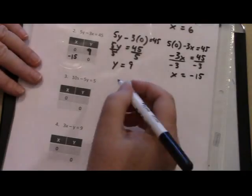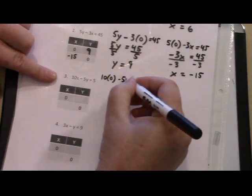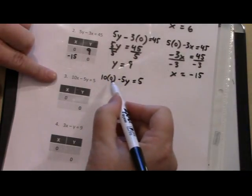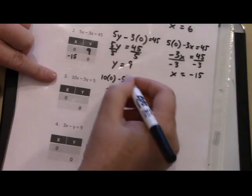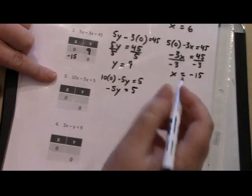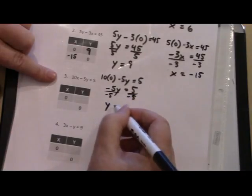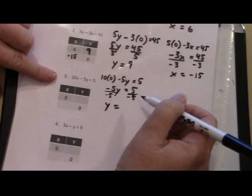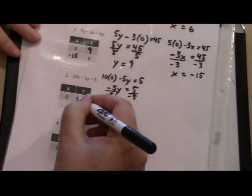Example number 3. 10 times 0, because I'm substituting my x in, minus 5y equals 5. 10 times 0 is 0. I end up with negative 5y. Remember to keep that negative sign with it equals 5. Now when I divide by negative 5, I end up with y equals 5 divided by 5 is 1. Anytime a numerator and a denominator are the same in a fraction, it just equals the value of 1. But because I have a positive being divided by a negative, they're opposite signs. So my answer is going to be negative 1. Let's fill that in right there.